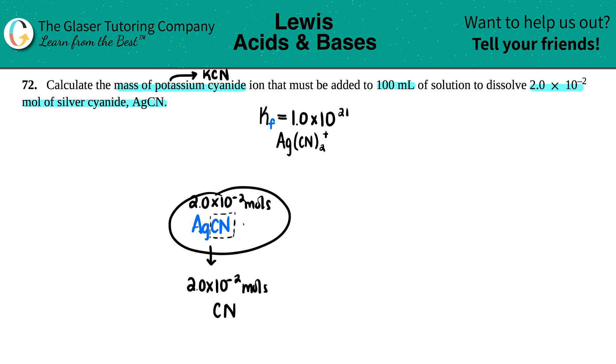We have 2.0 times 10 to the negative second moles of the CN coming from AgCN. Now we want to know what the mass of the potassium cyanide is that's being added with the AgCN. So now I'm going to add the other compound to the mix, KCN, but I only care about that cyanide. This is the one that I don't know, so I'm going to label it as x. I'm trying to find out how many moles of the CN minus is being added, and then I can find the grams.